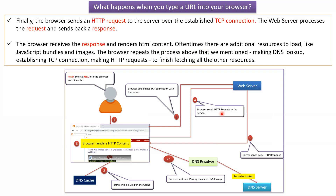Finally, the browser sends an HTTP request to the server over the established TCP connection. The web server processes the request and sends back an HTTP response. The browser receives the response and renders the HTML content. Often there are additional resources to load, like JavaScript bundles and images. The browser repeats the whole process — DNS lookup, establishing a TCP connection, and making HTTP requests — to finish fetching all the other resources.